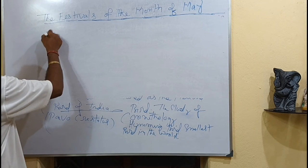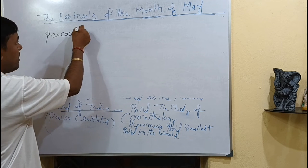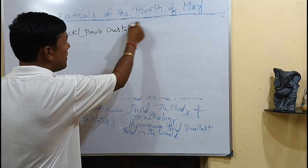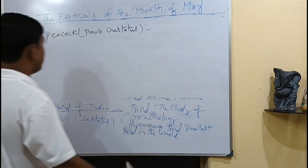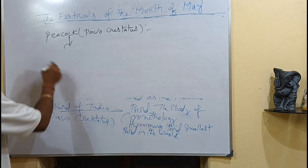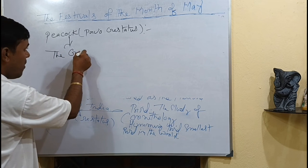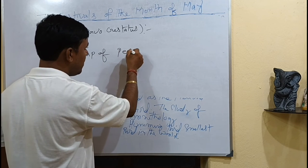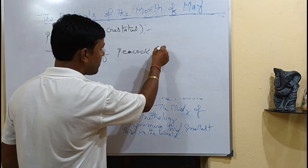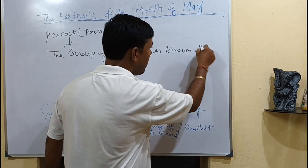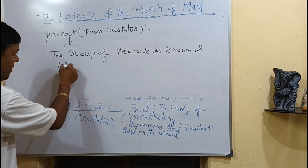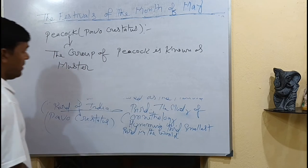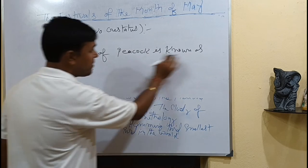The peacock, scientific name Pavo cristatus, was declared the national bird of India. A group of peacocks is called a muster — M-U-S-T-E-R. The group of peacocks is known as a muster.